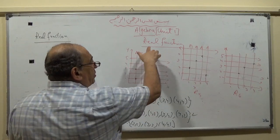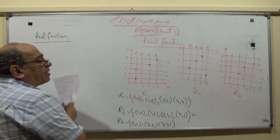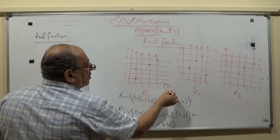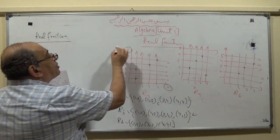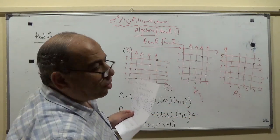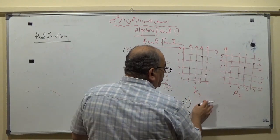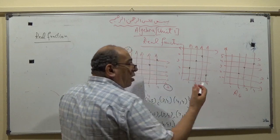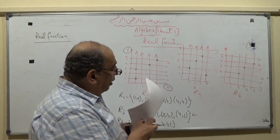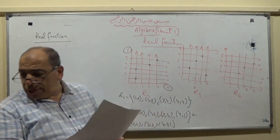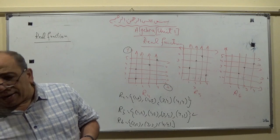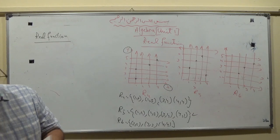Now, what is the meaning of a real function? If set X and set Y are subsets of the real numbers, and the relation is a function, it is called a real function — when both the domain and range are subsets of real numbers.